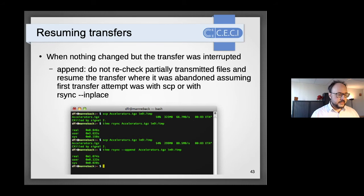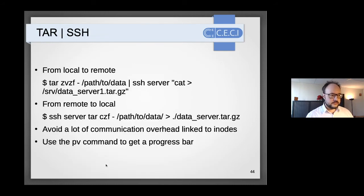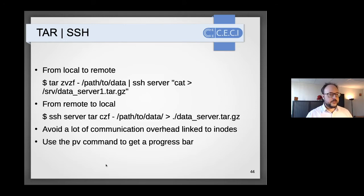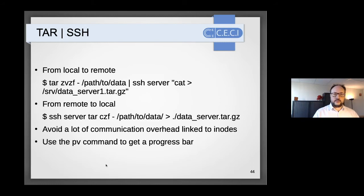rsync is powerful for synchronizing directories and ensuring only changed data is transferred. One weakness is metadata overhead: for large numbers of files, rsync must check each file individually to determine whether it has changed, even if the destination directory is empty.